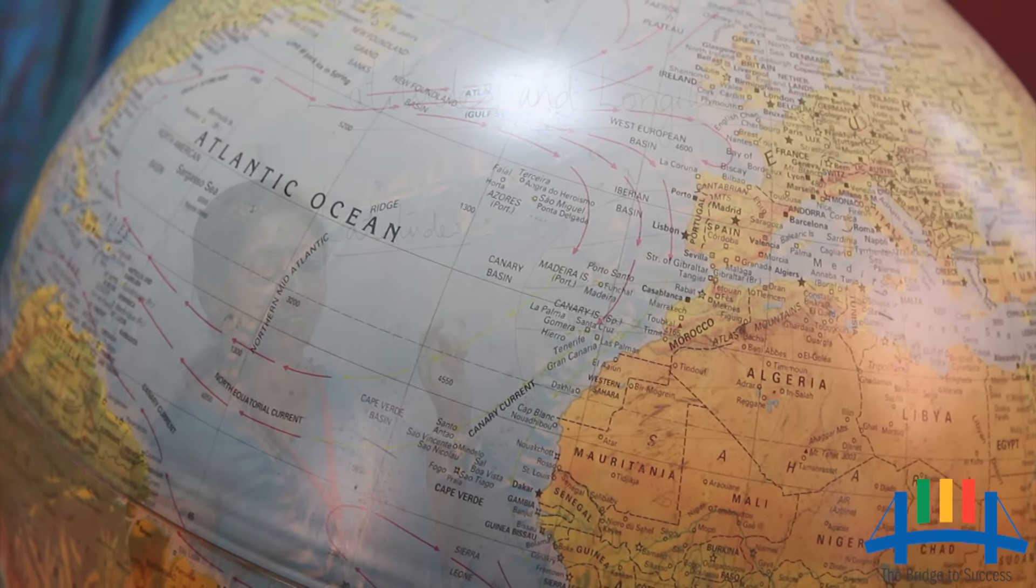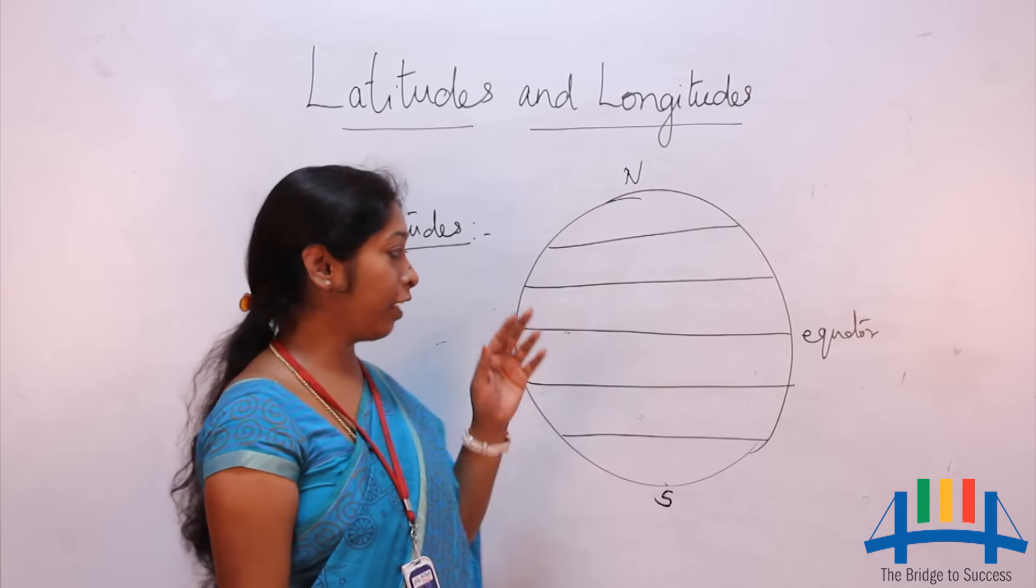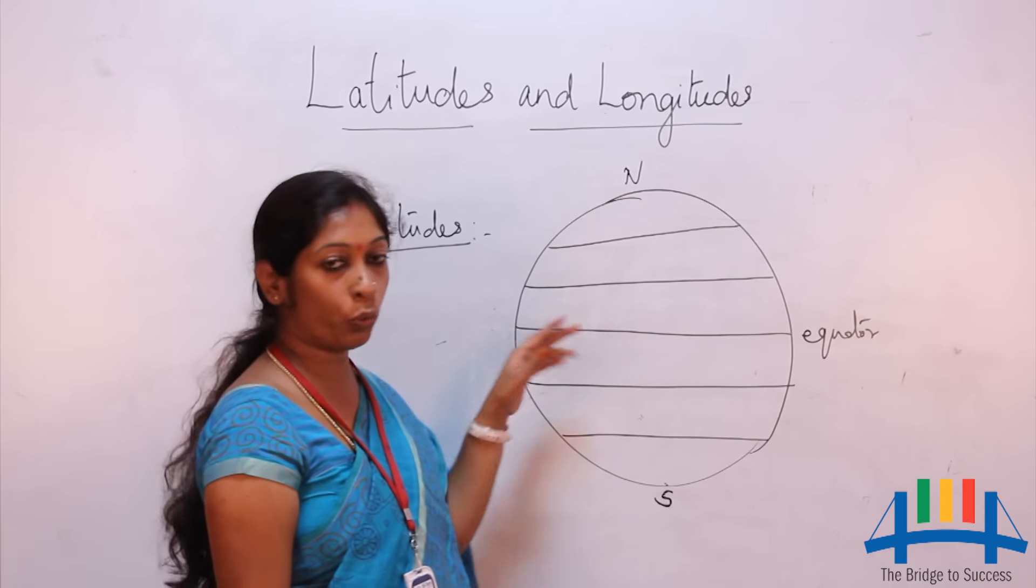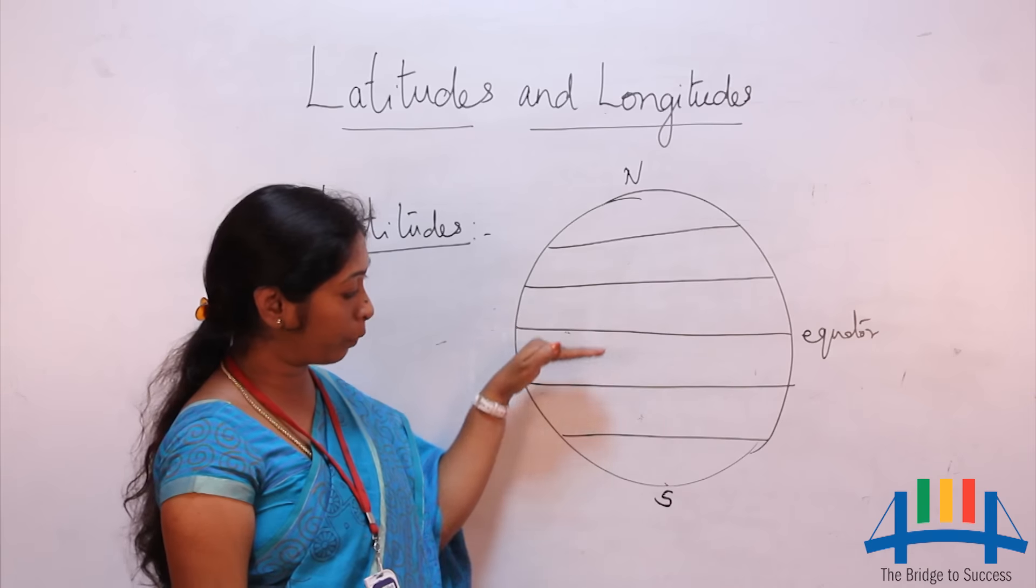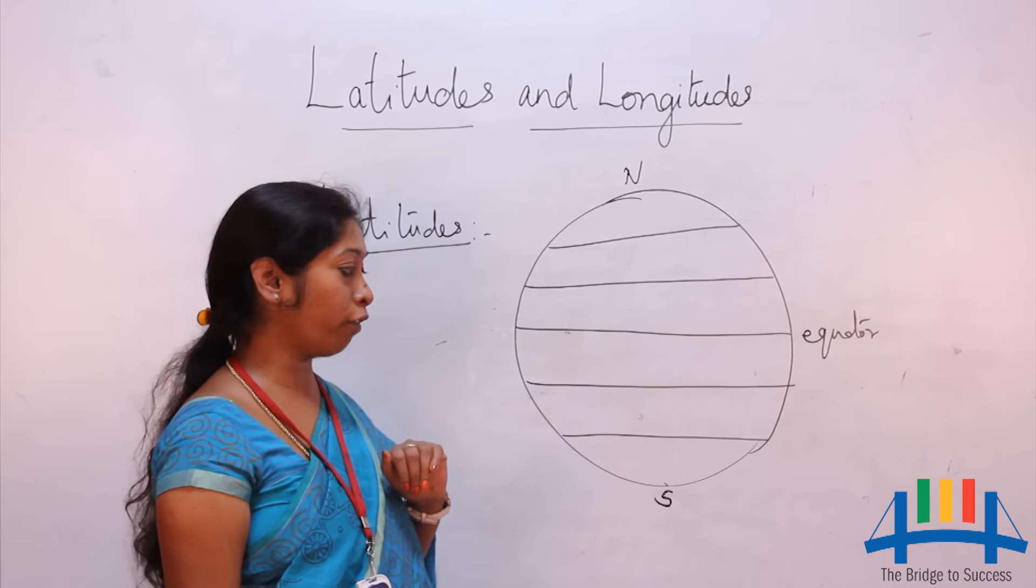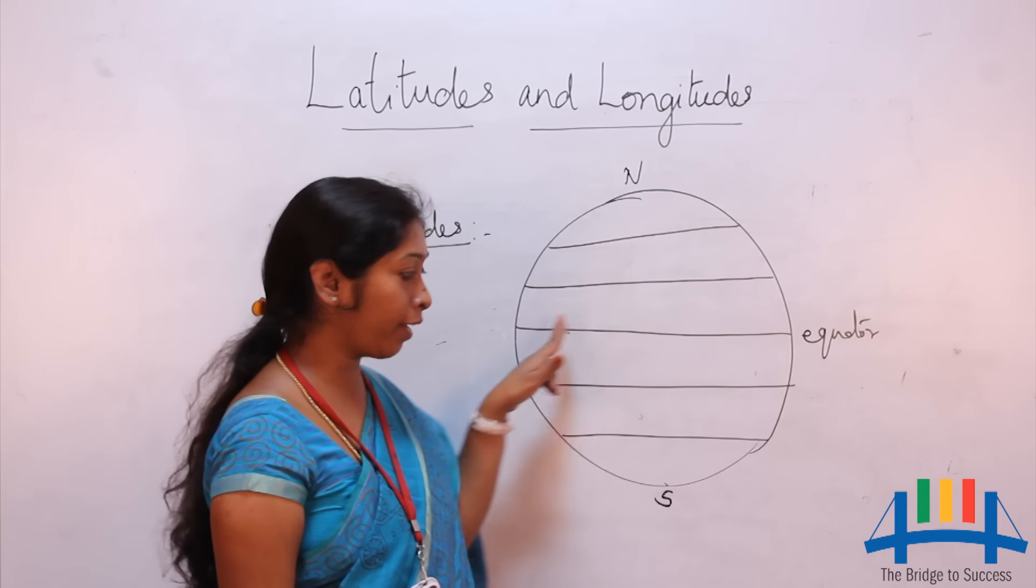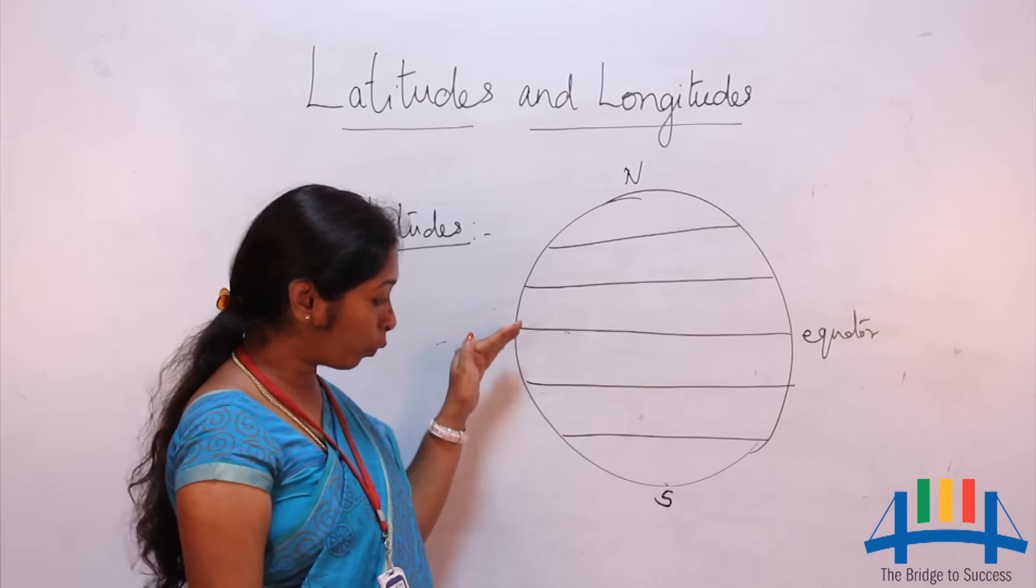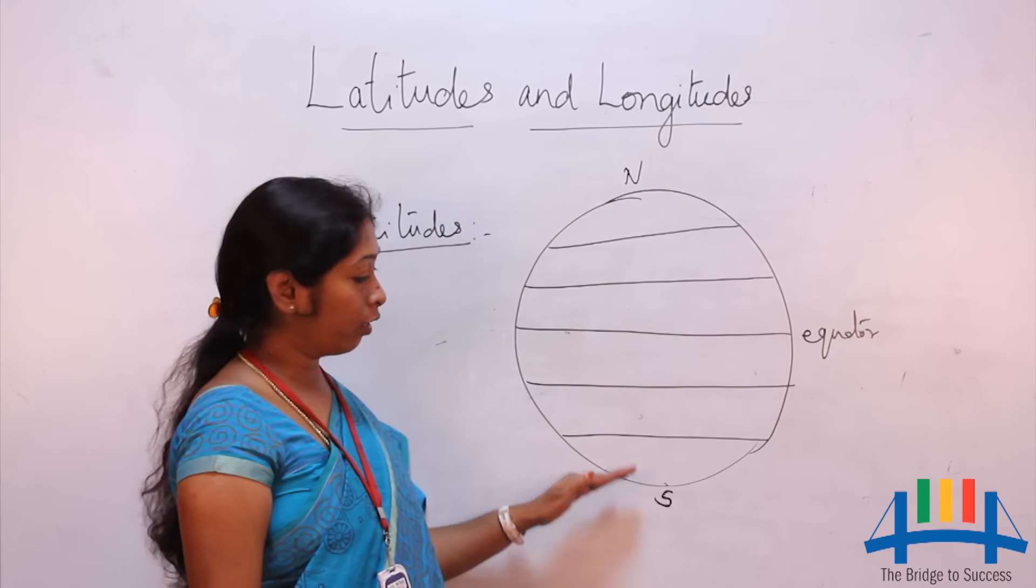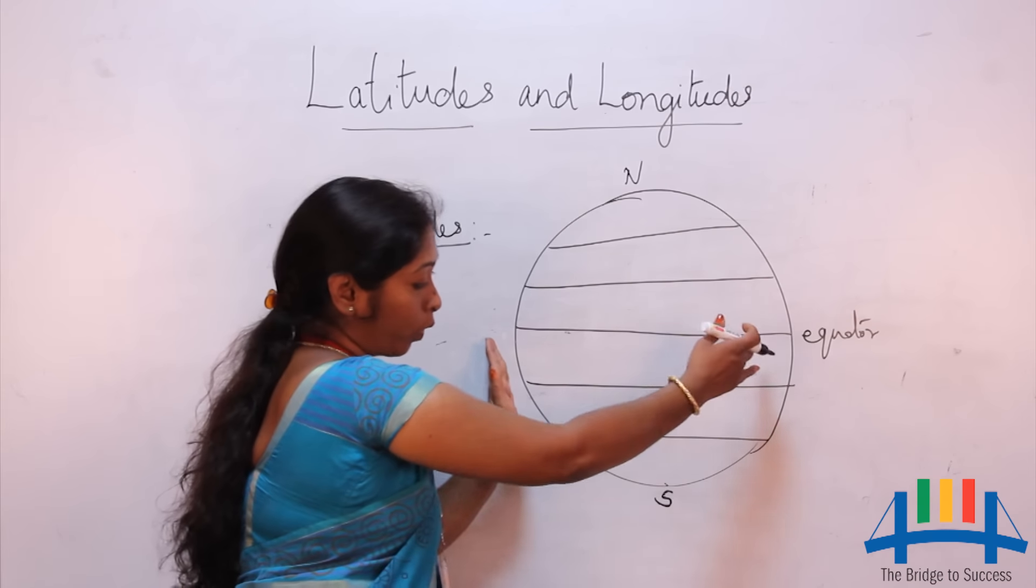Latitude is measured in degrees. They circle the earth from east to west. The distance between latitudes is always the same, and they are called parallels of latitude. The circumference of the earth is larger at the equator, and as we move towards the poles it decreases. The latitudes converge to a point at the poles.